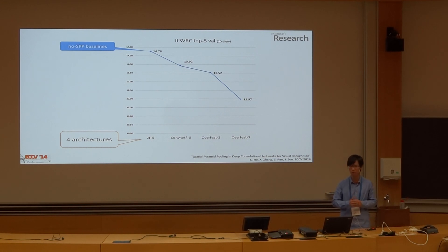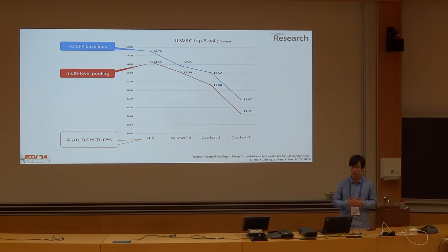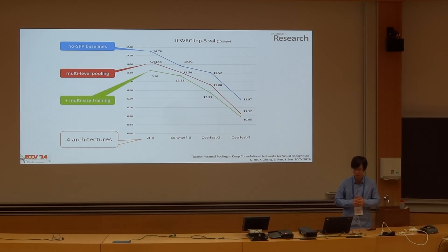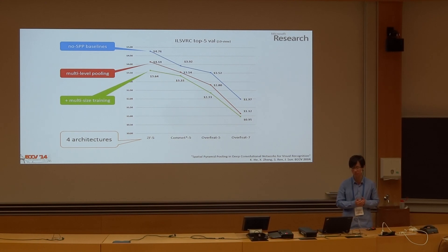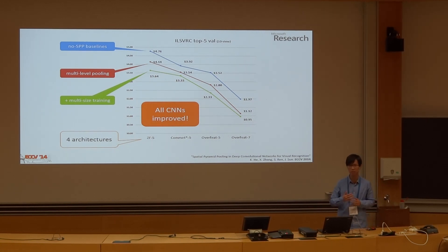We tested SPPNet on four very different network architectures from the literature. The blue line shows our baseline models without SPPNet. When we introduce the SPP layer — using only the multi-level pooling behavior — the SPP layer can improve all of the network structures by about 1.25% error. Next, we use multiple scales to train the same network during training, which is another property of the SPP layer, and we can see another gain. In all these experiments, all CNN architectures are improved by the SPP layer, independent of their specific designs.